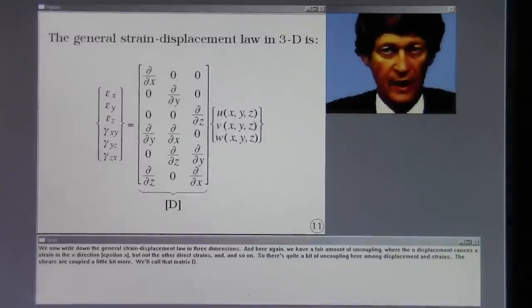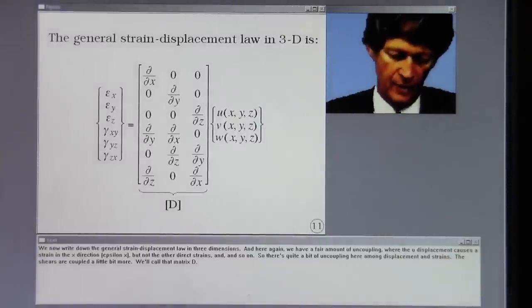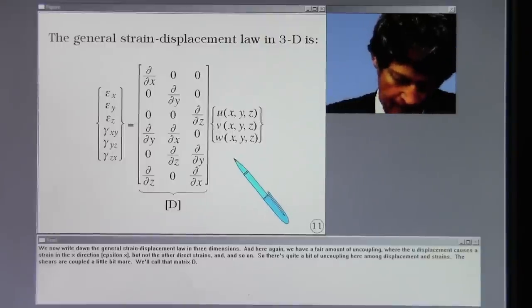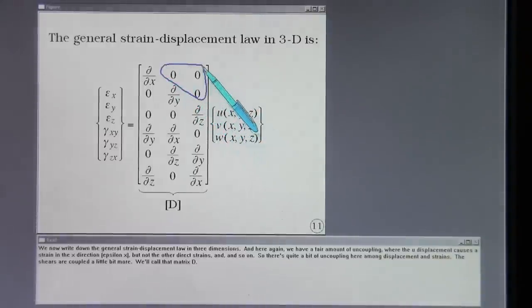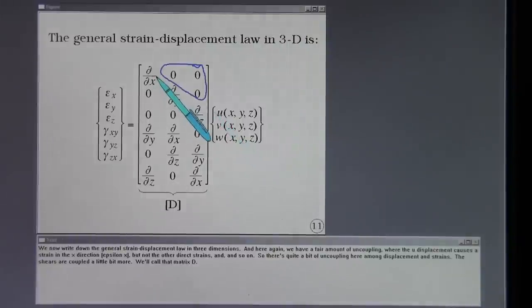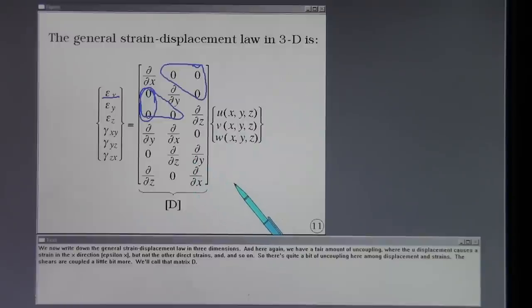We now write down the general strain displacement law in three dimensions. And here again we have a fair amount of uncoupling where the U displacement causes a strain in the X direction, Epsilon X, but not the other direct strains, and so on. So there's quite a bit of uncoupling here among displacements and strains. The shears are coupled a little bit more. We'll call that matrix D.